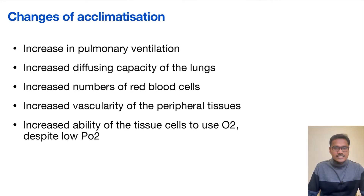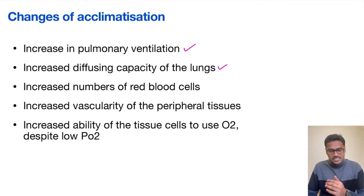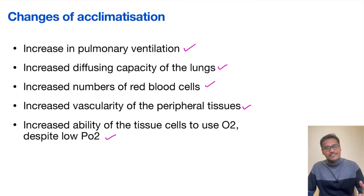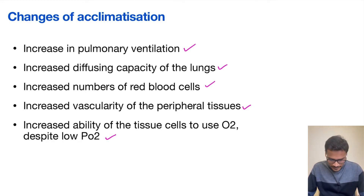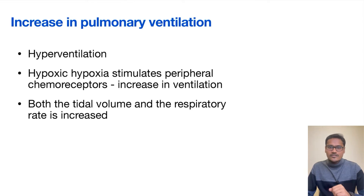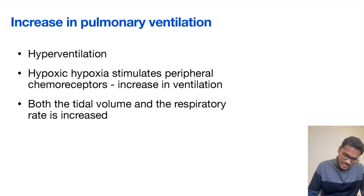Coming to the changes in acclimatization: various things happen, including increase in pulmonary ventilation, increase in diffusing capacity of the lung, increase in number of red blood cells, increase in vascularity of the tissues, and finally increased ability of all tissues to use oxygen despite low PO2. The first change is hyperventilation — breathing faster — which starts in the respiratory process itself.